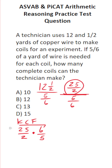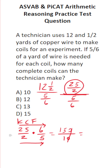When you multiply fractions, you just multiply straight across. 25 times 6 is going to be 150. 2 times 5 is 10. Cross out these corresponding zeros — 15 divided by 1 is 15. So this technician can clearly make 15 coils from 12.5 yards of copper wire.